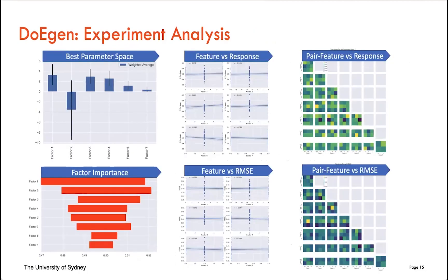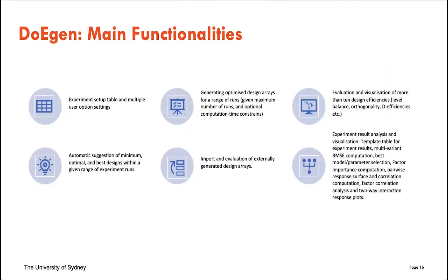The last step in the DoEgen analysis is the analysis part, which provides basic evaluation plots based on the ground truth that the experiment is measured against. This includes parameter space analysis — which parameters on average are the best — which factors are the most important based on range (covered more in the badlands use case scenario), feature versus response correlations, and how features correlate with RMSE. Pairwise feature combinations of response and RMSE are also provided.